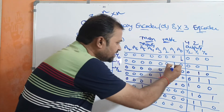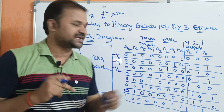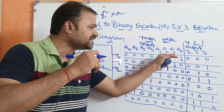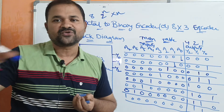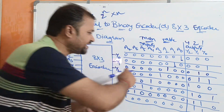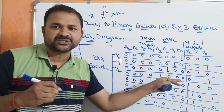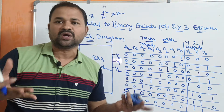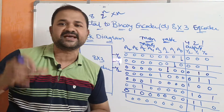Next, a1 is active — a1 is 1 and all remaining bits are 0. Let a1 represent decimal number 1. The binary representation of decimal 1 is 001, so the output is 001. Next, a2 is active and remaining bits are inactive. Let a2 represent decimal number 2. The binary representation of 2 is 010, so the output is 010.